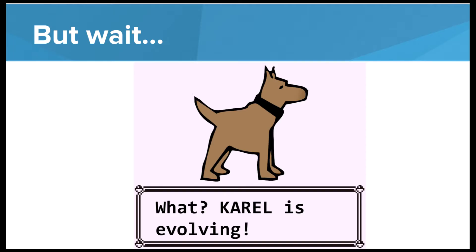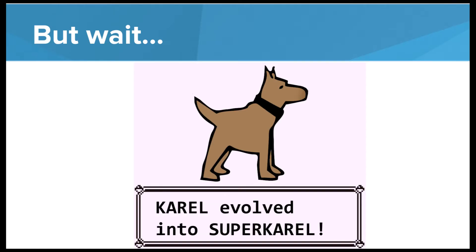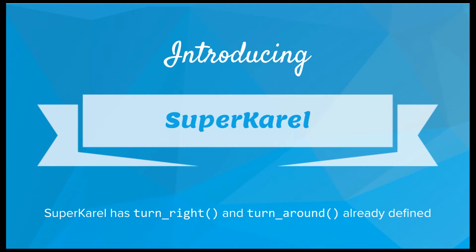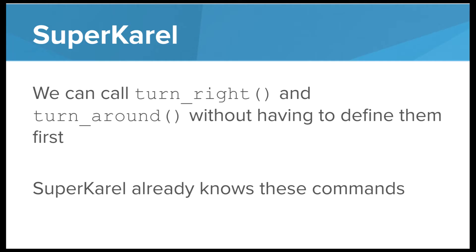I've been waiting for this for a long time. Carol has evolved into Super Carol. This is huge — this is awesome because Super Carol can learn new moves. Super Carol has turn right and turn around already defined. From now on we'll be using Super Carol instead of Carol. We can call turn right and turn around without having to define them first. They're built in — Super Carol already knows these commands.